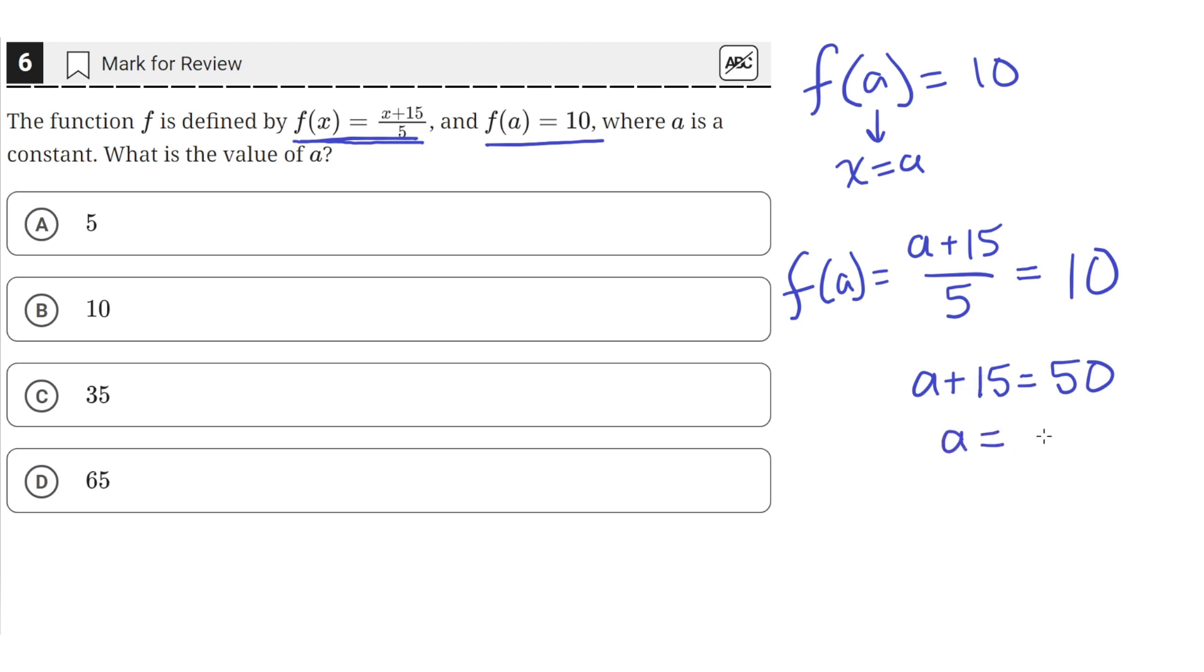And if we subtract 15 from both sides, we get 50 minus 15, which is equal to 35. So the value of a is 35, which is answer choice C.